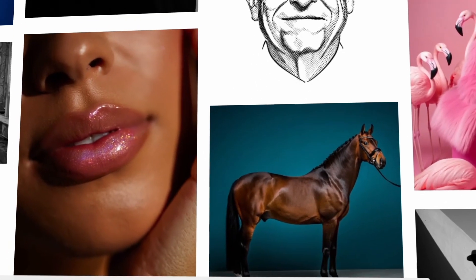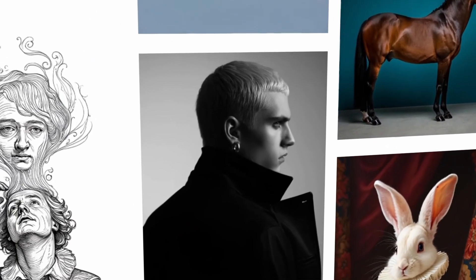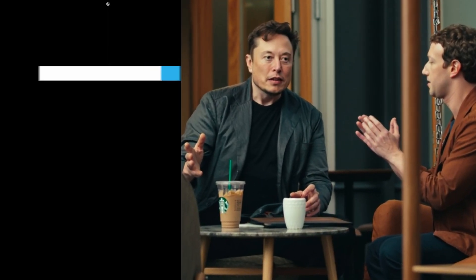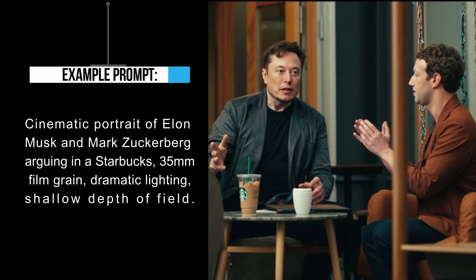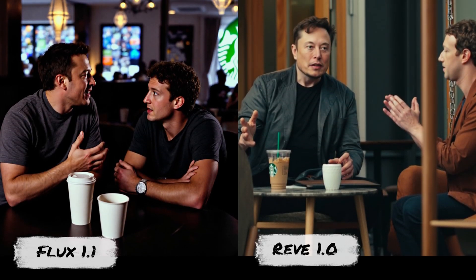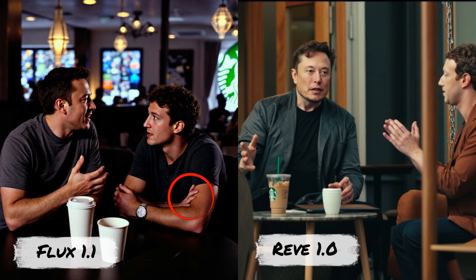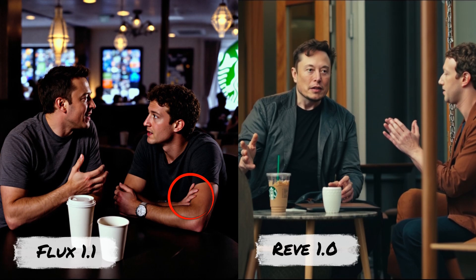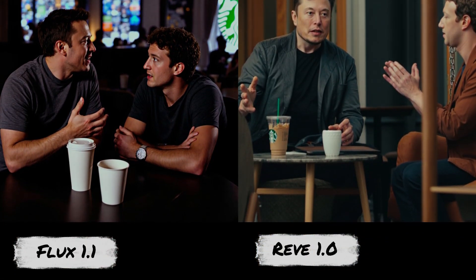Want to create professional-grade portraits with AI? Rev 1.0 has you covered. Example prompt using 35mm film grain adds a cinematic texture, while dramatic lighting highlights the tension in the scene. Comparison test: the same prompt on other models like Flux 1.1 often results in distorted hands, while Rev 1.0 delivers flawless details that rival professional photography.